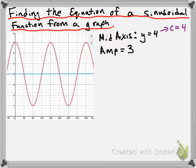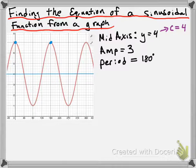Also, you can kind of tell what the period is going to be. You notice that we have our first peak right here at 0, and our second peak occurs over here — our second maximum occurs right there. So since our first maximum is at 0 and our second maximum is at 180, that actually suggests to us that we would have a period of 180 degrees.